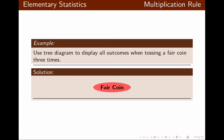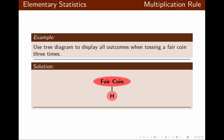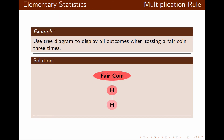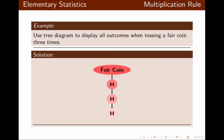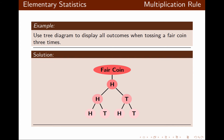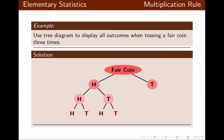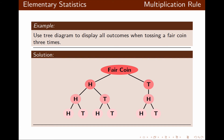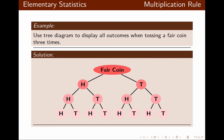Let's make a tree diagram to display all outcomes when tossing a fair coin three times. The first coin could be heads; the second coin could be heads, and the third coin could also be heads or tails. Or the second coin could be tails and the third heads or tails. We also need to consider the first coin being tails, with heads or tails following, and we continue this pattern until we get all possible outcomes.